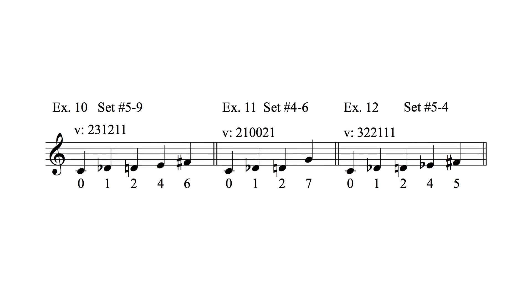What's really interesting from the composer's point of view is different kinds of interval vectors, because the vector tells you the interval character of the set, and this can give you a distinct musical character as well. Generally speaking, there are three kinds of vectors that are of interest to us. The first kind — we'll see in example 10 — is, with set 5-9, all the interval classes are present. The vector is 2-3-1-2-1-1, meaning there's no interval missing whatsoever. This little five-note chord contains any interval you want to include.